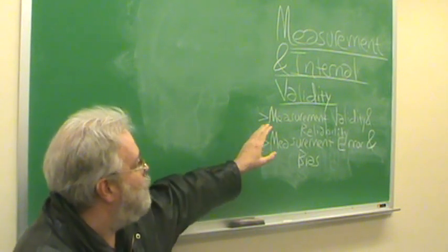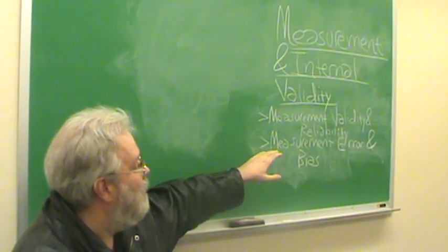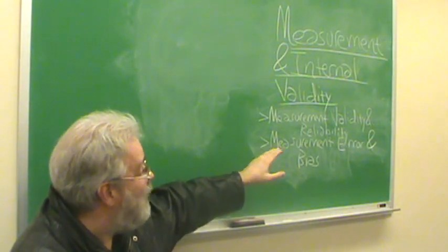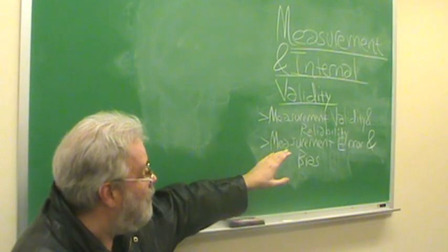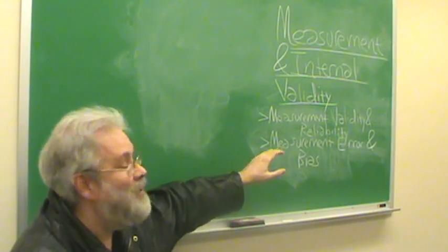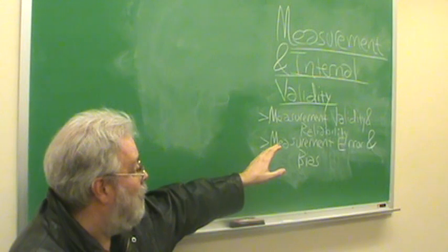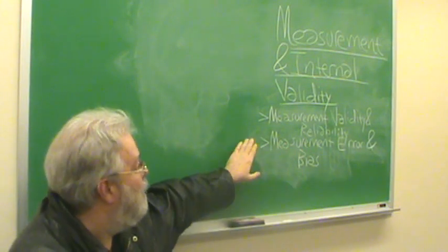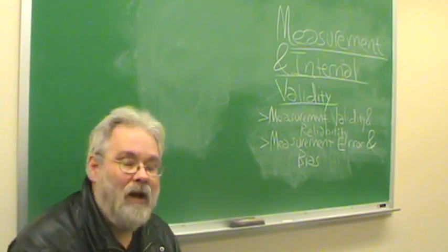The larger point is we want our measurements to be valid and, frankly, we want them to be reliable. There's a logical connection between reliability and validity. Generally, reliability is a precondition for validity. On the other hand, it doesn't guarantee validity. Next, measurement error and bias.